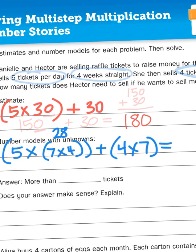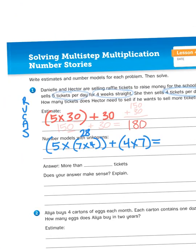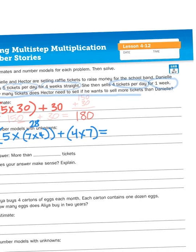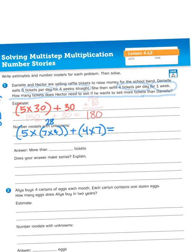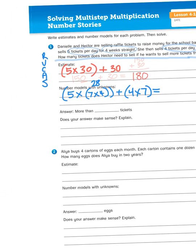The question is: How many tickets does Hector need to sell if he wants to sell more tickets than Danielle? Now what we need to do is we need to figure out what is five times 28 plus 28 more.